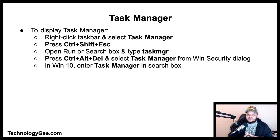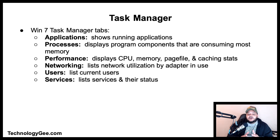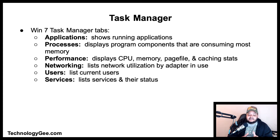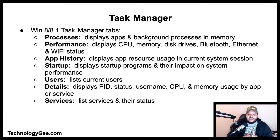The Windows 7 Task Manager tabs are: Applications — shows running applications; Processes — displays program components consuming the most memory; Performance — displays CPU, memory, page file, and caching stats; Networking — lists network utilization by adapter; Users — lists current users; Services — lists services and their status.